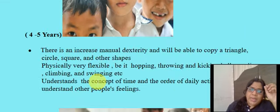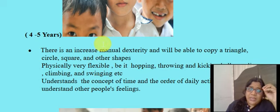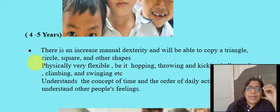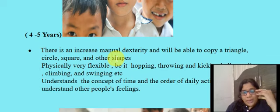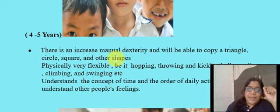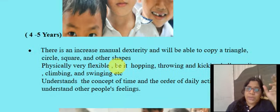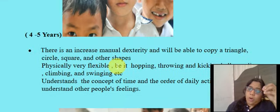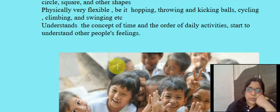Next comes four to five years. Here there is increased manual dexterity — children will be able to copy a triangle, circle, square, and other shapes, meaning they develop high hand-eye coordination at this age. They are more flexible, and hopping is something that happens in this stage.